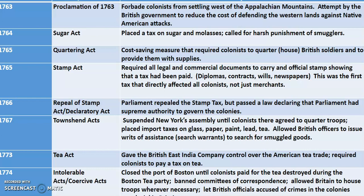The Stamp Act required all legal and commercial documents — diplomas, contracts, newspapers — to have a special taxed stamp on them. It's not a postal stamp; it's a special stamp you needed to get on the paper. Later, the British repealed the Stamp Tax, but then passed a law basically declaring they were still in charge, which the colonists thumbed their nose at and laughed at.